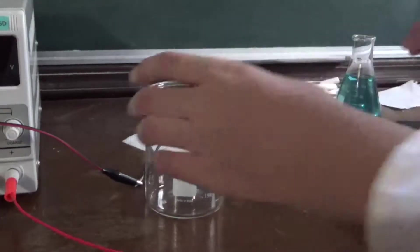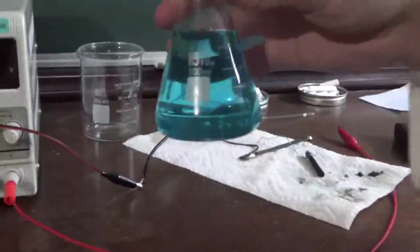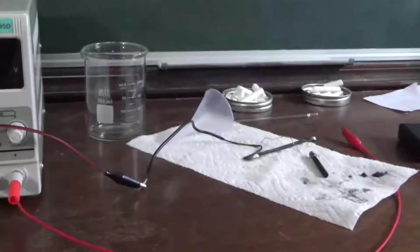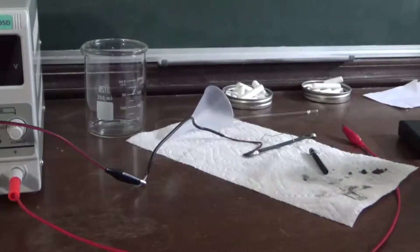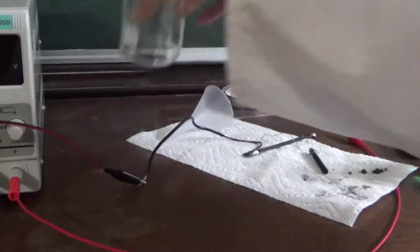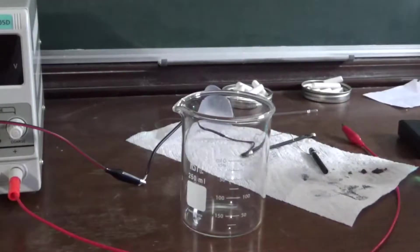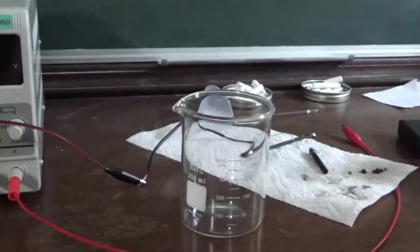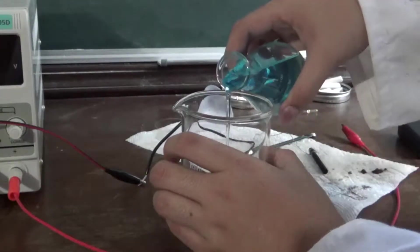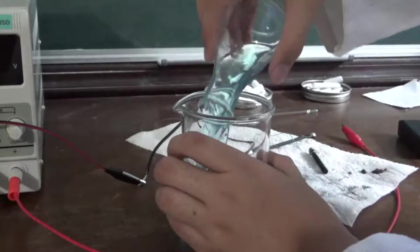As you can see here I have filtered off the solution and it's this pretty blue liquid again. Just like before. But now we should have a slightly more concentration of sulfuric acid in there as well. So now we're going to put it back to the beaker and we're going to do the same thing again for a few more times.